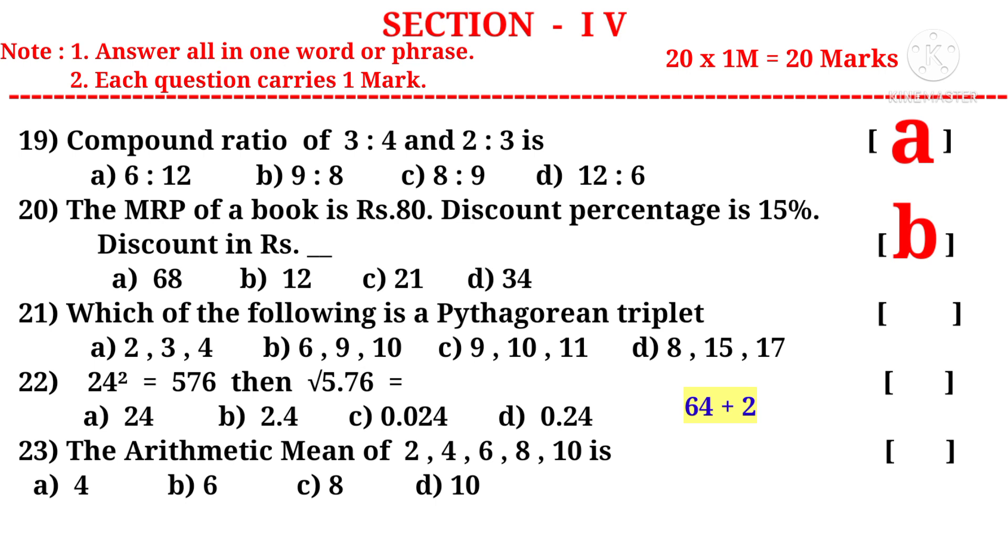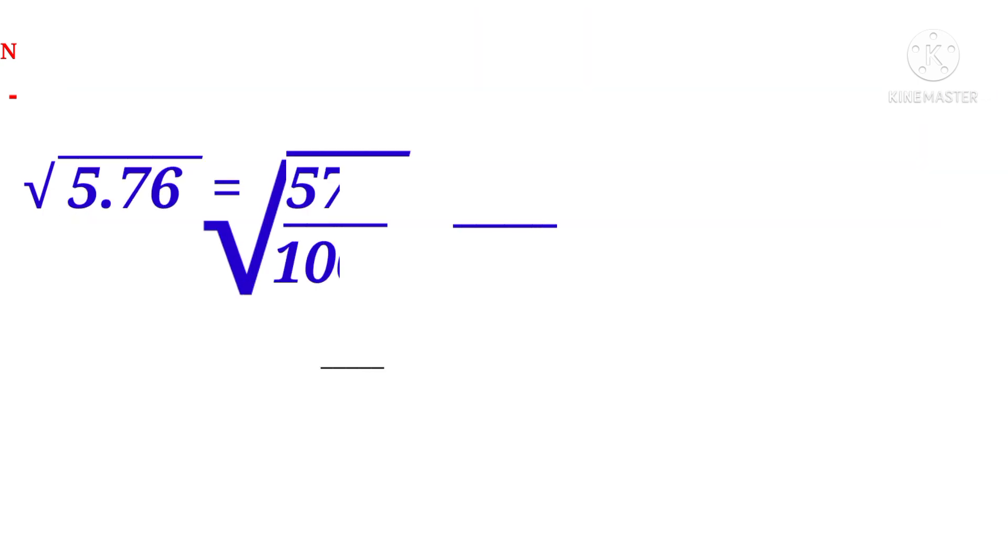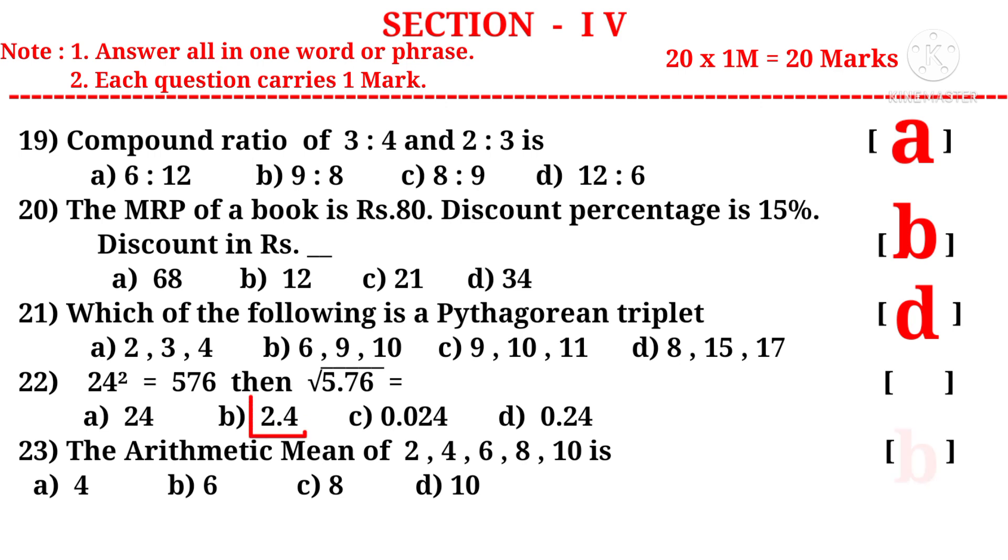Question 21: Which of the following is a Pythagorean triplet? 8^2 + 15^2 gives 17^2. The correct choice is D. Question 22: 24^2 = 576, then √5.76 is equal to. Let us write √5.76 = √(576/100). So √576 is 24, √100 is 10. So 24/10 is 2.4 is the answer. The correct choice is B.